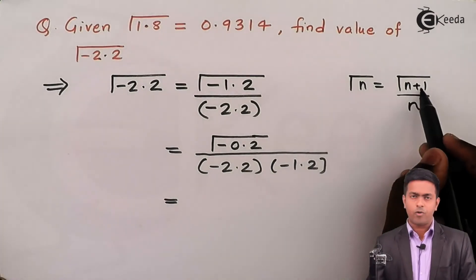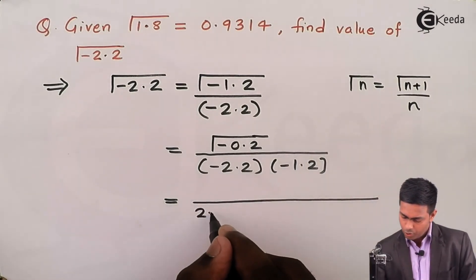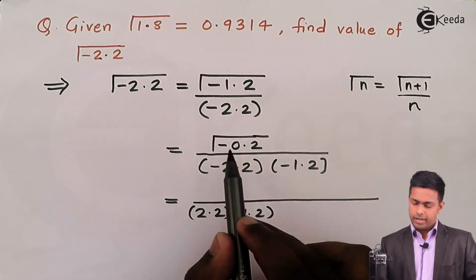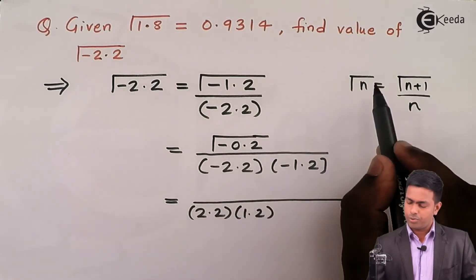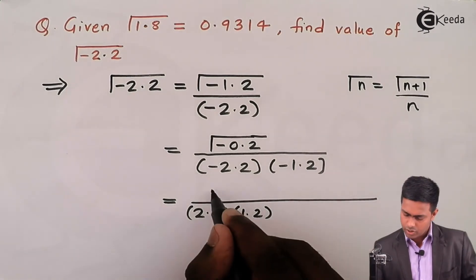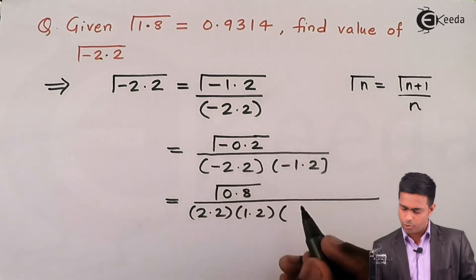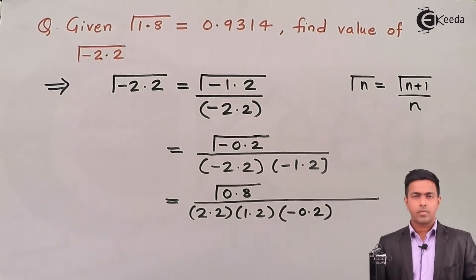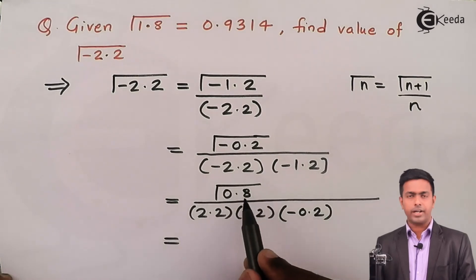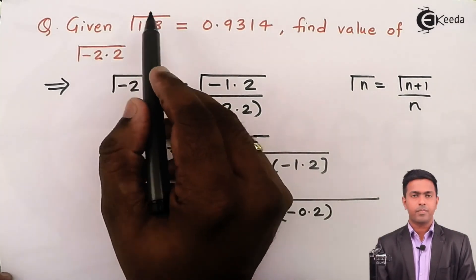We apply the same formula once more for gamma(-0.2): the first two values (-2.2) and (-1.2) remain as is, and gamma(-0.2) = gamma(-0.2 + 1) / (-0.2) = gamma(0.8) / (-0.2). Now we apply the formula one more time for gamma(0.8): gamma(0.8) = gamma(0.8 + 1) / 0.8 = gamma(1.8) / 0.8.